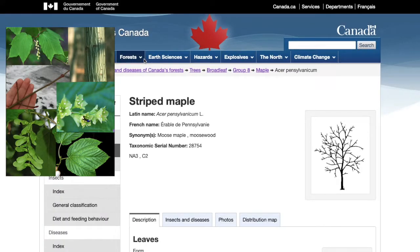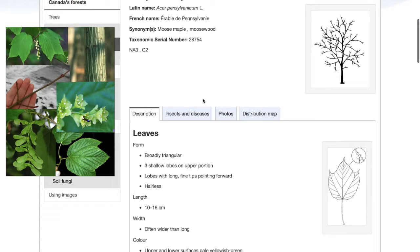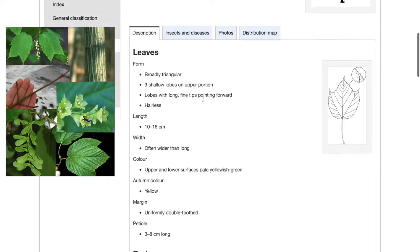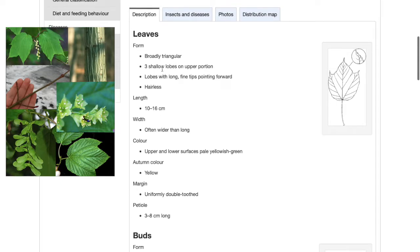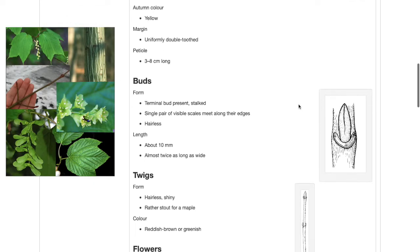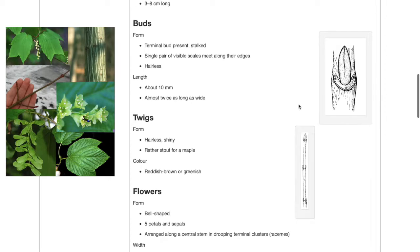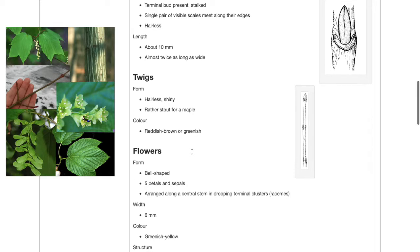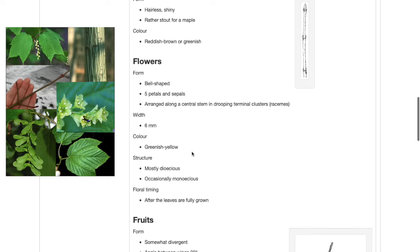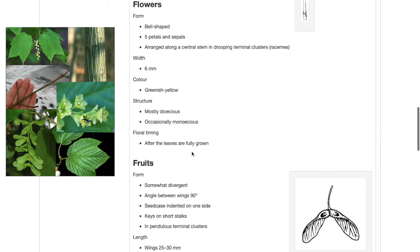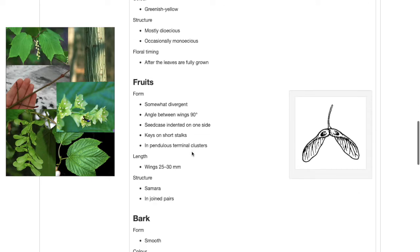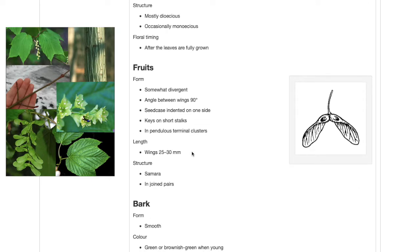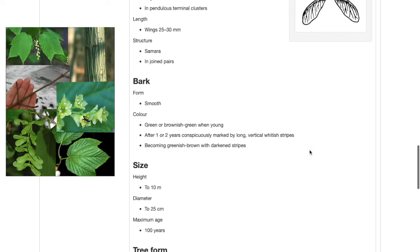Here it will give you more detailed information about this species. Scroll through the description and make sure that it matches up with the features of your tree. The leaves are broadly triangular with three lobes, ending in long tips. The twigs are reddish brown, shiny, and hairless, with buds that are longer than they are wide. The flowers are bell shaped, have five petals, and they're hanging on a central stem in clusters. The fruit is also indented and winged, and the bark is striped. These are all features that are the same as the features in the photos of the tree that I want to ID.